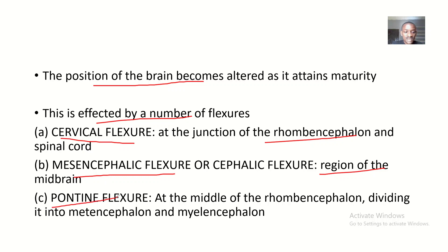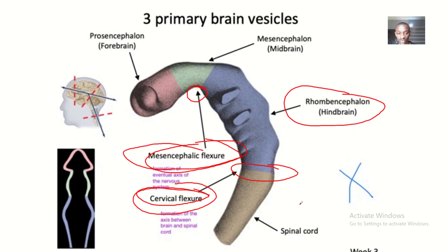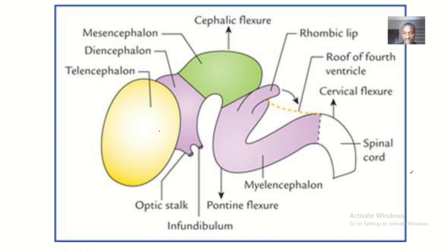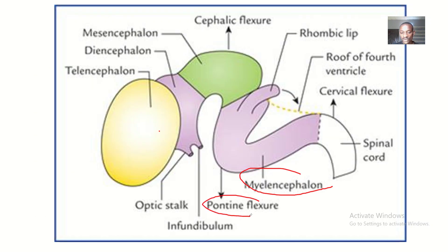Next, we have the pontine flexure. The pontine flexure is at the middle of the rhomboencephalon, which is dividing into the metencephalon and the myelencephalon. You can see the myelencephalon here. This is the pontine flexure, and the pontine flexure is basically at that region.